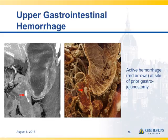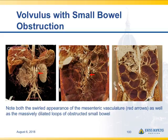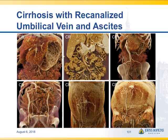Just a beautiful example there. In this case you can see the dilated loops of small bowel, then you look at the vessels and they're twisted — a very nice example of a volvulus. Here's a patient with cirrhosis: look at the recanalized umbilical vein, the flow in the collaterals in the abdominal wall, the inferior epigastric collaterals, the gastric varices, and collateral pathways in patients with cirrhosis. Just a very nice example.